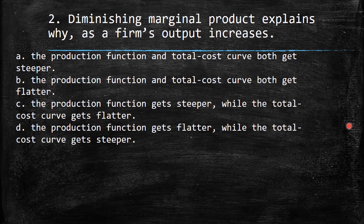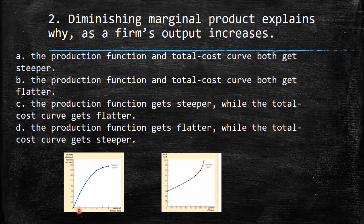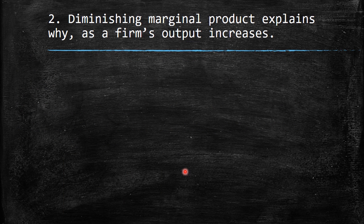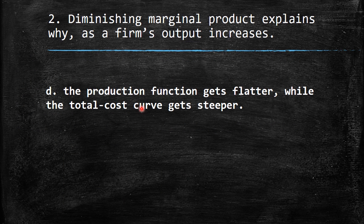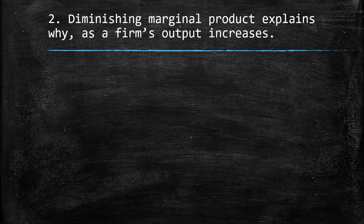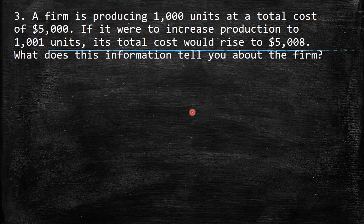Looking at the options, we need to find the one that says the production function gets flatter while the total cost curve gets steeper. So the answer is: the production function gets flatter while the total cost curve gets steeper.